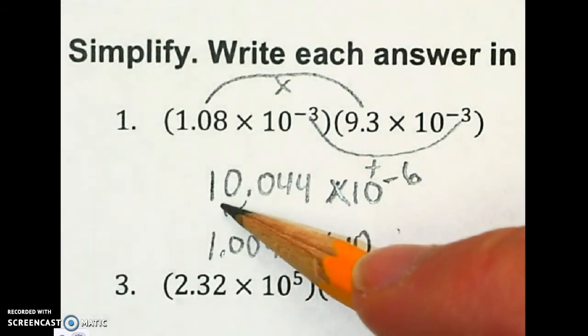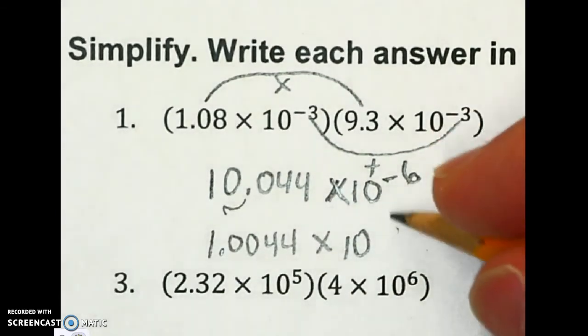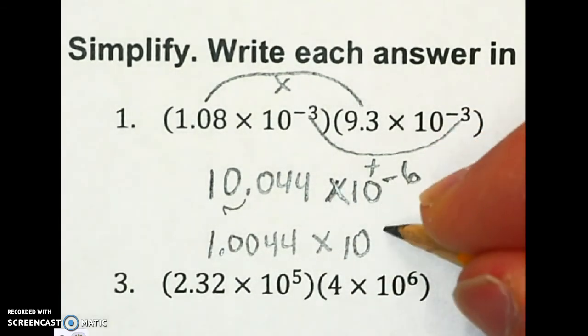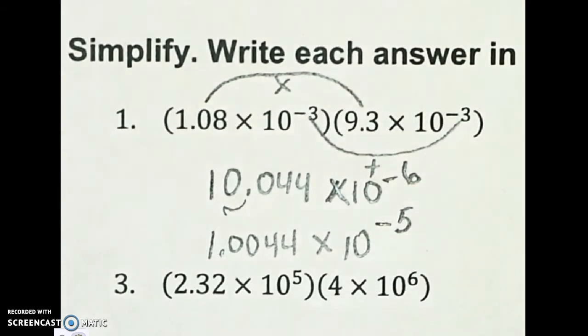And now I need to figure out my power. What happens when I move the decimal left? Well, when I move it left, the power goes up 1. So now it is negative 5. And we got that one done.